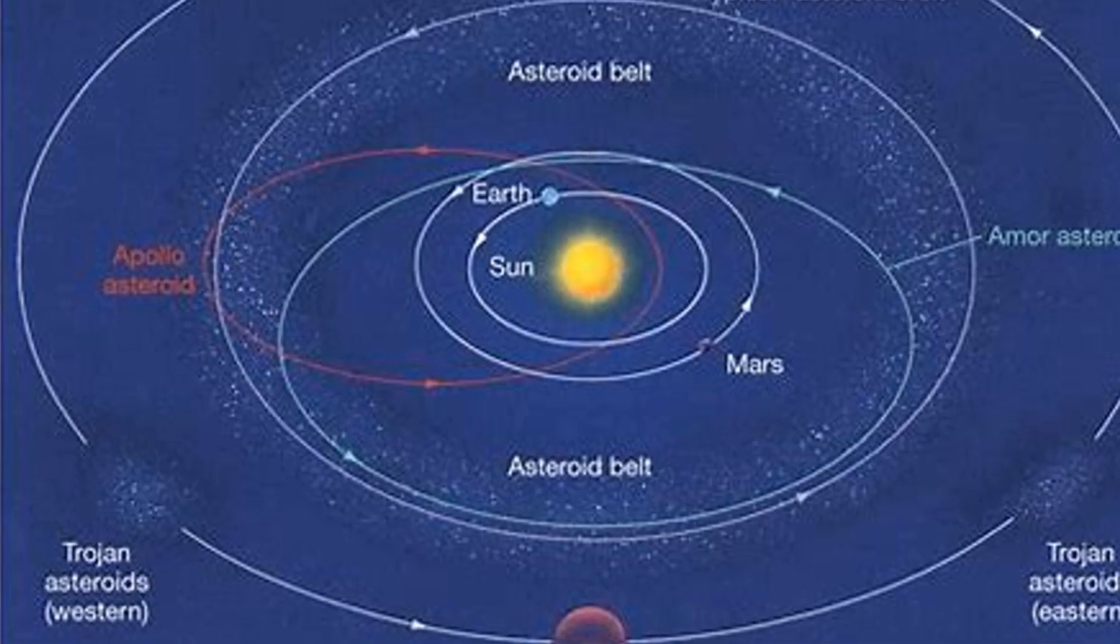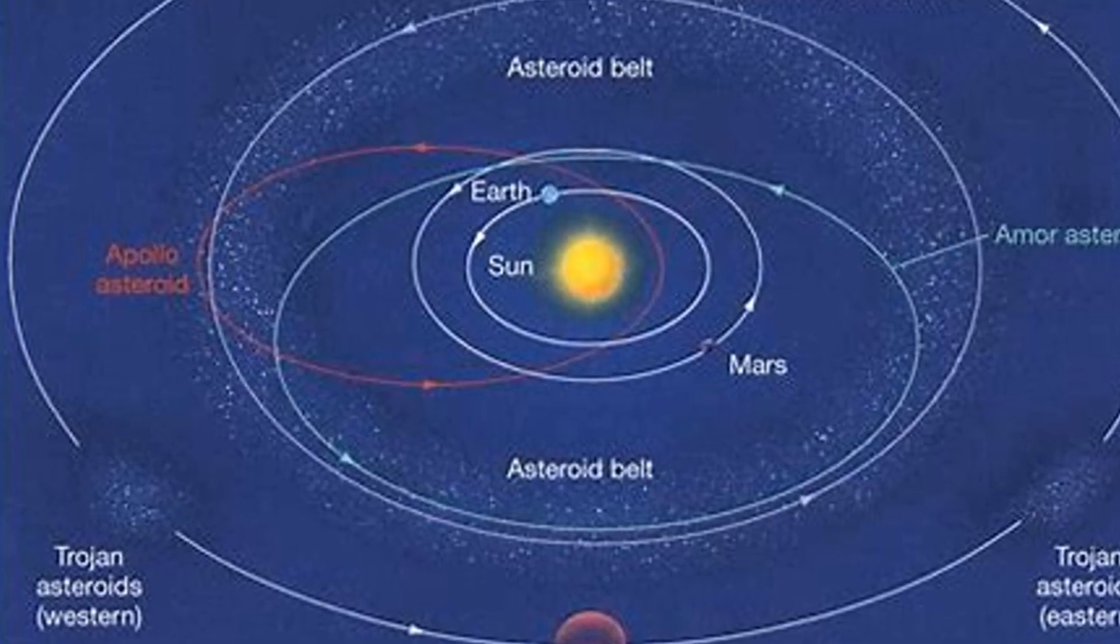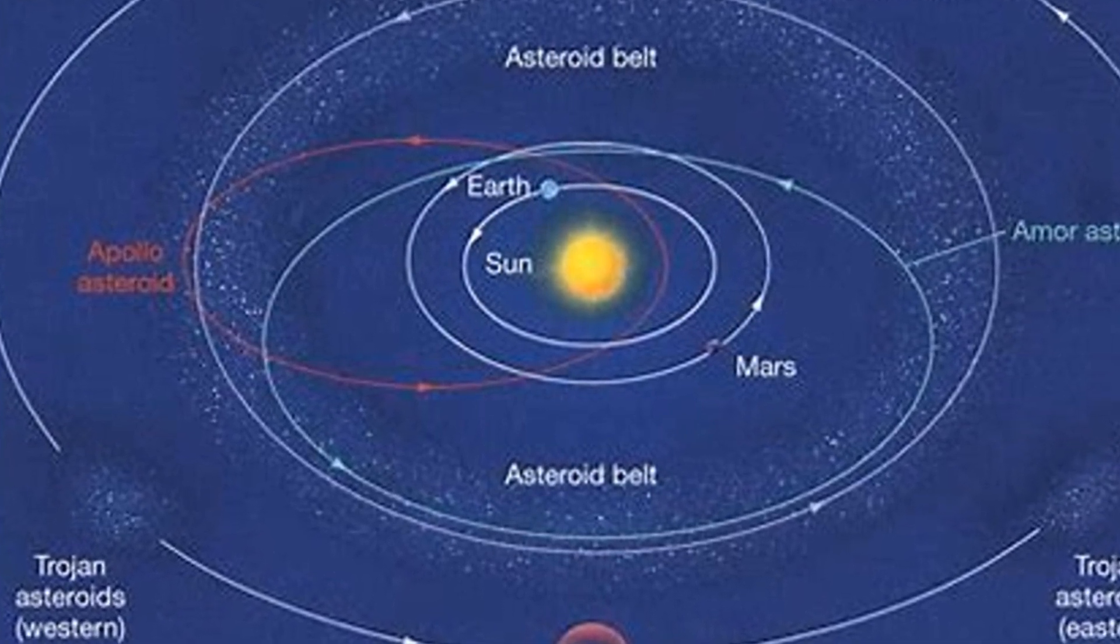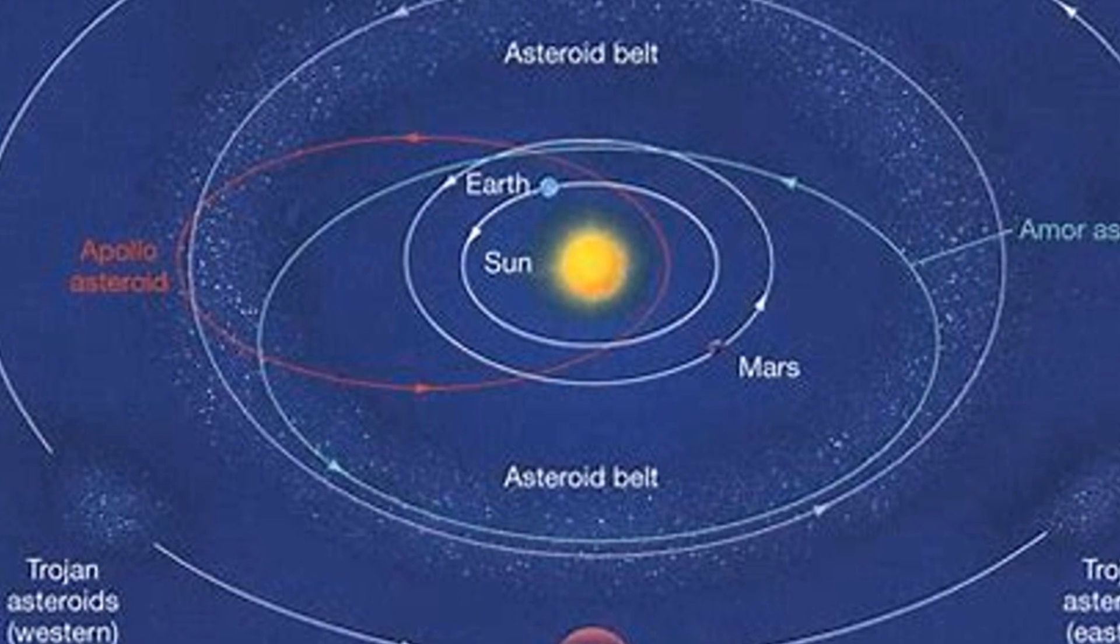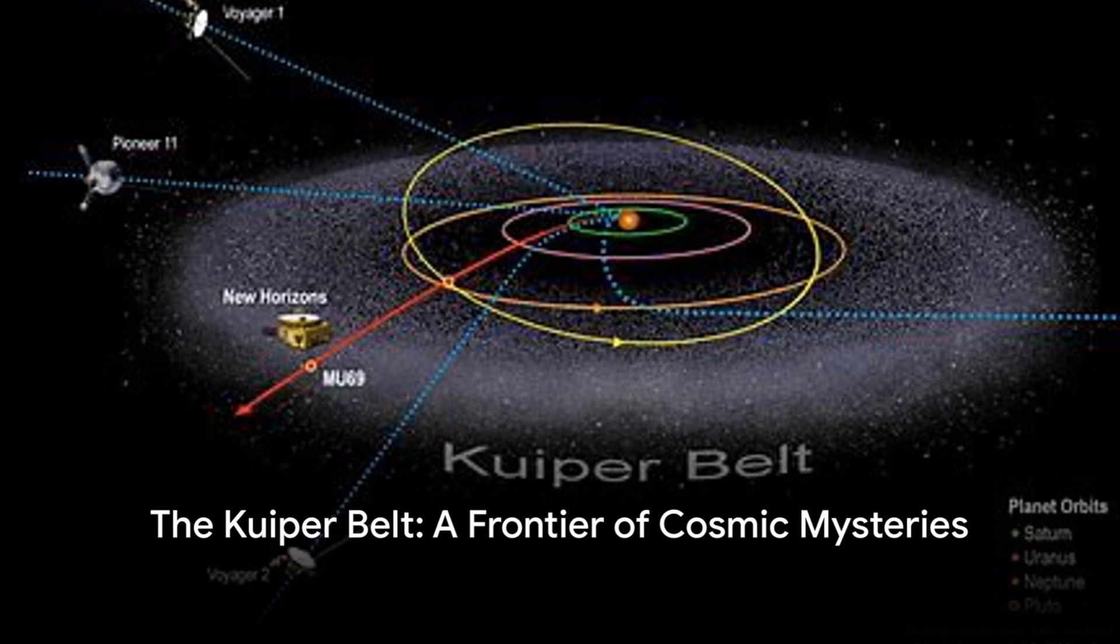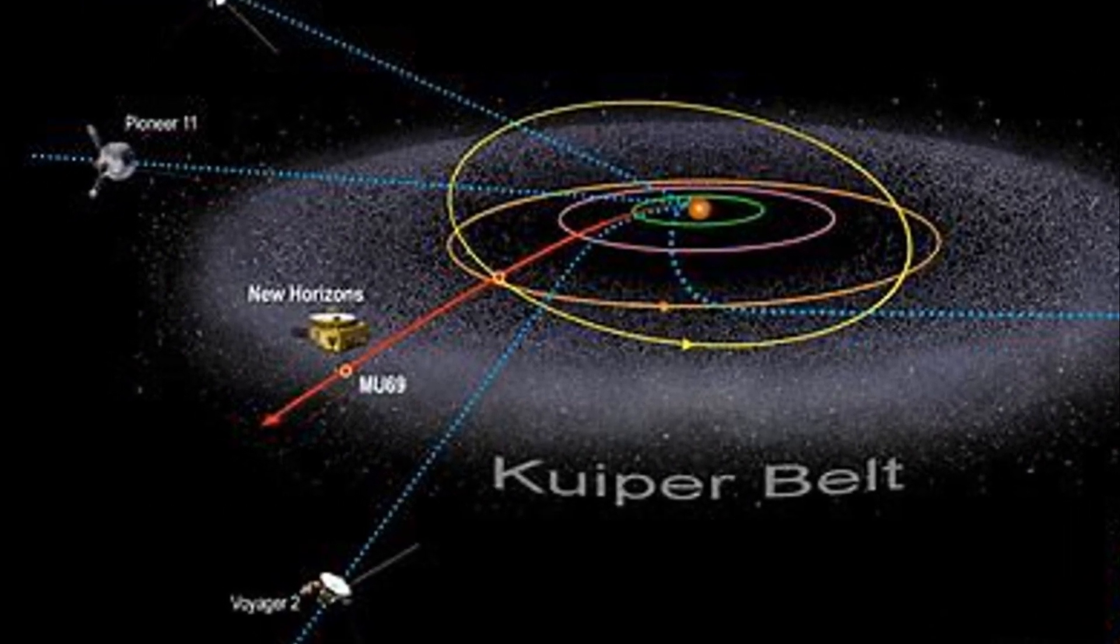Yet, the Kuiper Belt perplexes us with its mysteries. Why is its outer edge so sharp? Why are there gaps in its disk? These puzzles hint at unseen planets or forces at play, stirring the curiosity of scientists. The edge of our solar system, the Kuiper Belt, continues to be a frontier of cosmic mysteries.